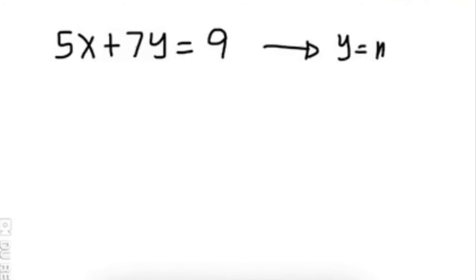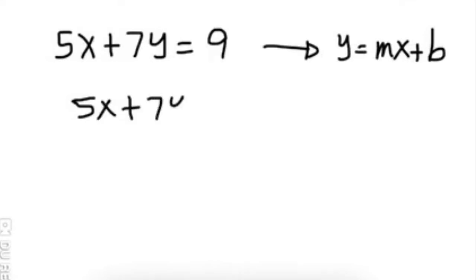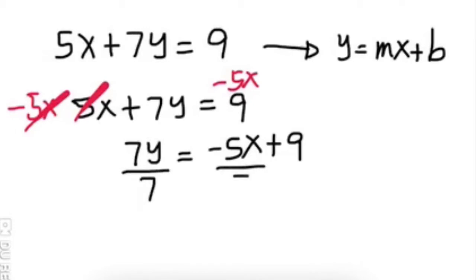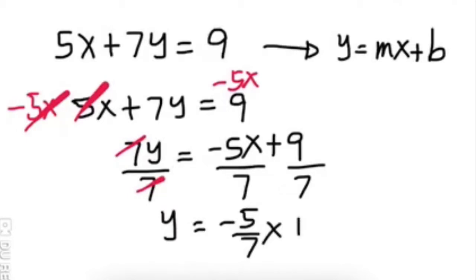More examples. Transform 5x plus 7y is equal to 9 to the slope-intercept form y is equal to mx plus b. By addition property of equality, we add negative 5x to both sides. That gives 7y is equal to negative 5x plus 9. Since we have 7 in y, we use the division property of equality and divide all terms by 7. So y is equal to negative 5 over 7 times x plus 9 over 7. That is your answer.